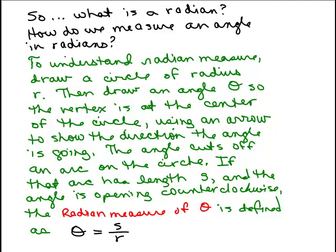Here I'm going to explain how we're going to do it. You're going to draw a circle of radius R and then you're going to draw an angle theta. The vertex of that angle is at the center of the circle and you're going to use an arrow to show the direction the angle is going. We're going to have it go counterclockwise to be a positive angle. The angle cuts off an arc on the circle and if that arc has length S, and the angle is opening counterclockwise, the radian measure of theta is defined as theta equals S over R.